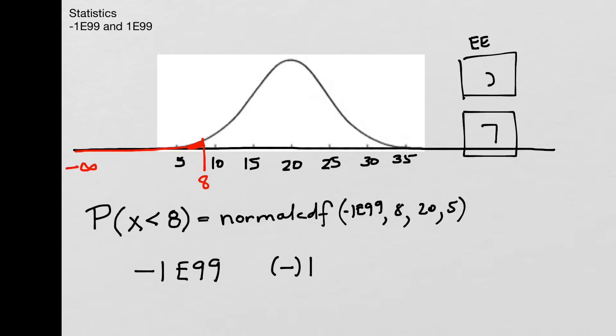So before you hit that comma key, you're going to press 2nd, and then the comma. And that will enter just a single E on your calculator.